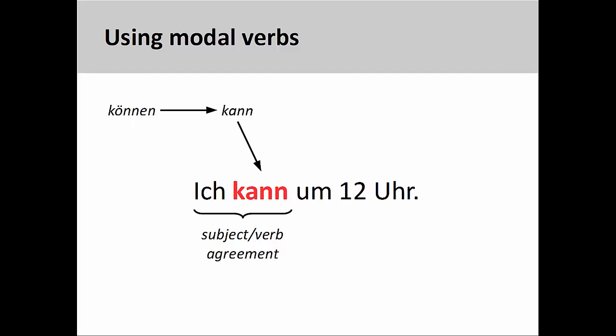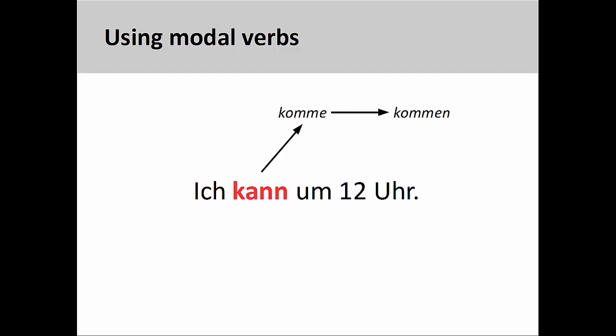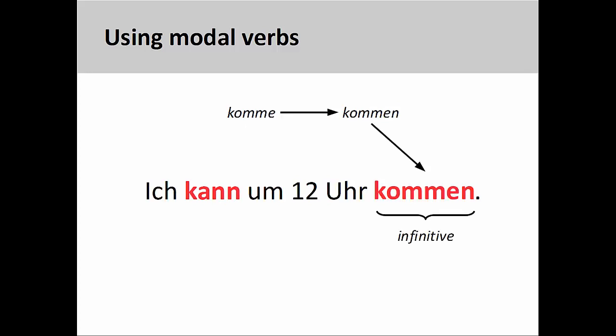The modal verb needs to be placed in the second position. To do this, I take the infinitive of the modal verb, conjugate it so that there is subject-verb agreement, and insert the modal verb into the second position. The verb that used to be in the second position is removed from the sentence and, since it no longer needs to agree with the subject of the sentence, reverts to its infinitive form. This infinitive form is then inserted at the very end of the sentence: ich kann um zwölf Uhr kommen — I can come at twelve o'clock.